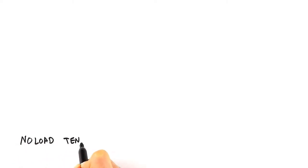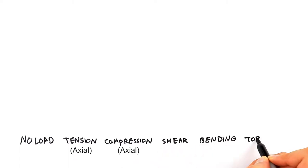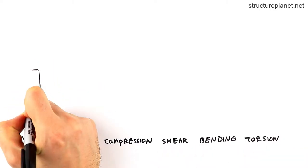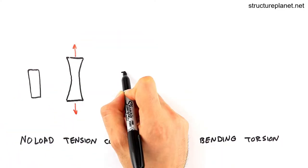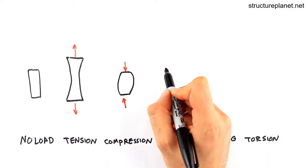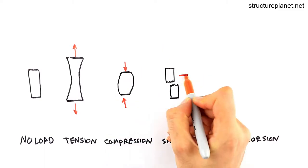What are the internal forces? Axial or normal force, shear force, bending moment and torsional moment. An object subjected to external loads will have internal forces. Objects can have multiple types of internal forces at the same time.